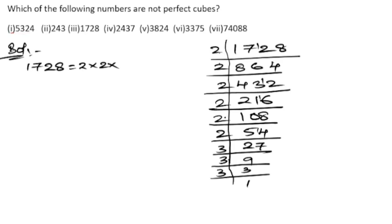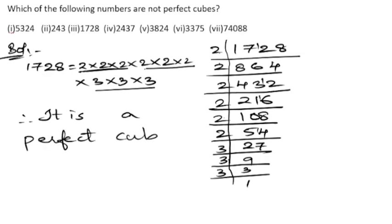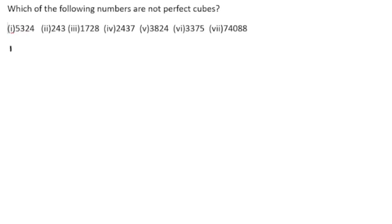We have six 2s and three 3s. Grouping them in triples: 2×2×2, 2×2×2, and 3×3×3 — each forms a complete group. Therefore, 1728 is a perfect cube.